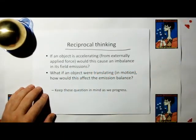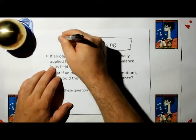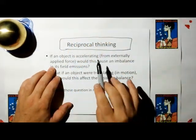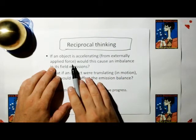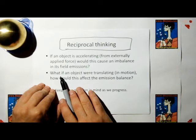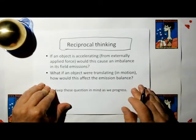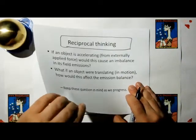Reciprocal thinking. This is the whole basis. This is the recurring theme in ethereal mechanics. If an object is accelerating from externally applied force, would this then cause an imbalance in the field emission? Or what if an object were translating in motion? How would this affect the emission balance? Keep these questions in mind as we progress.